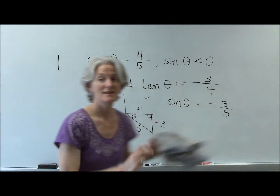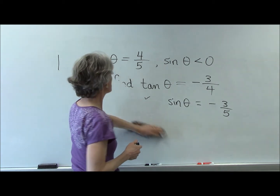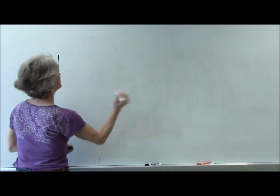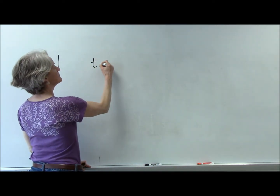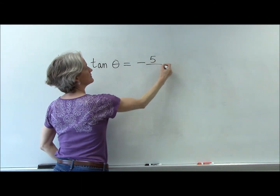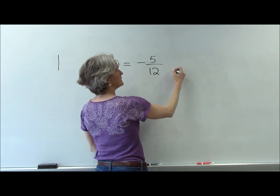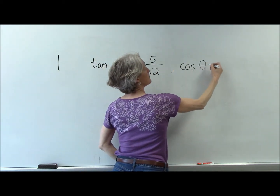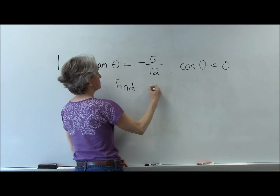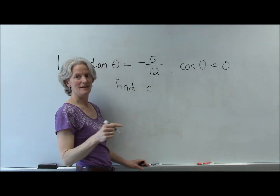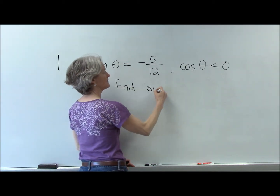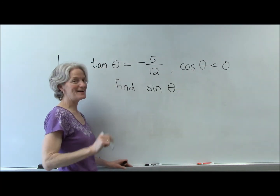Let's draw another one. What if we knew that the tangent of theta was negative 5 twelfths? And cosine is less than zero. Find the sine of that angle. Try that at home.